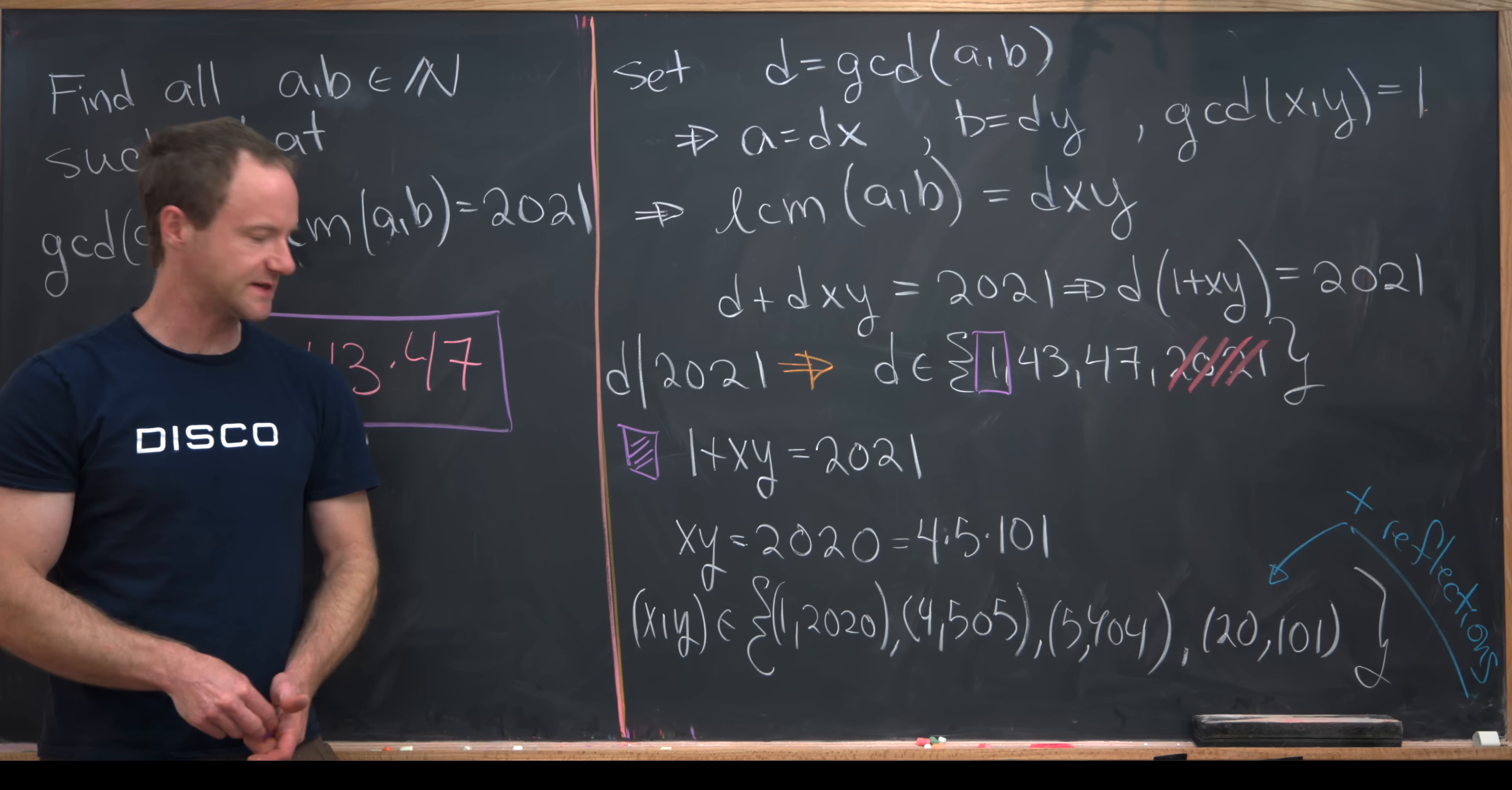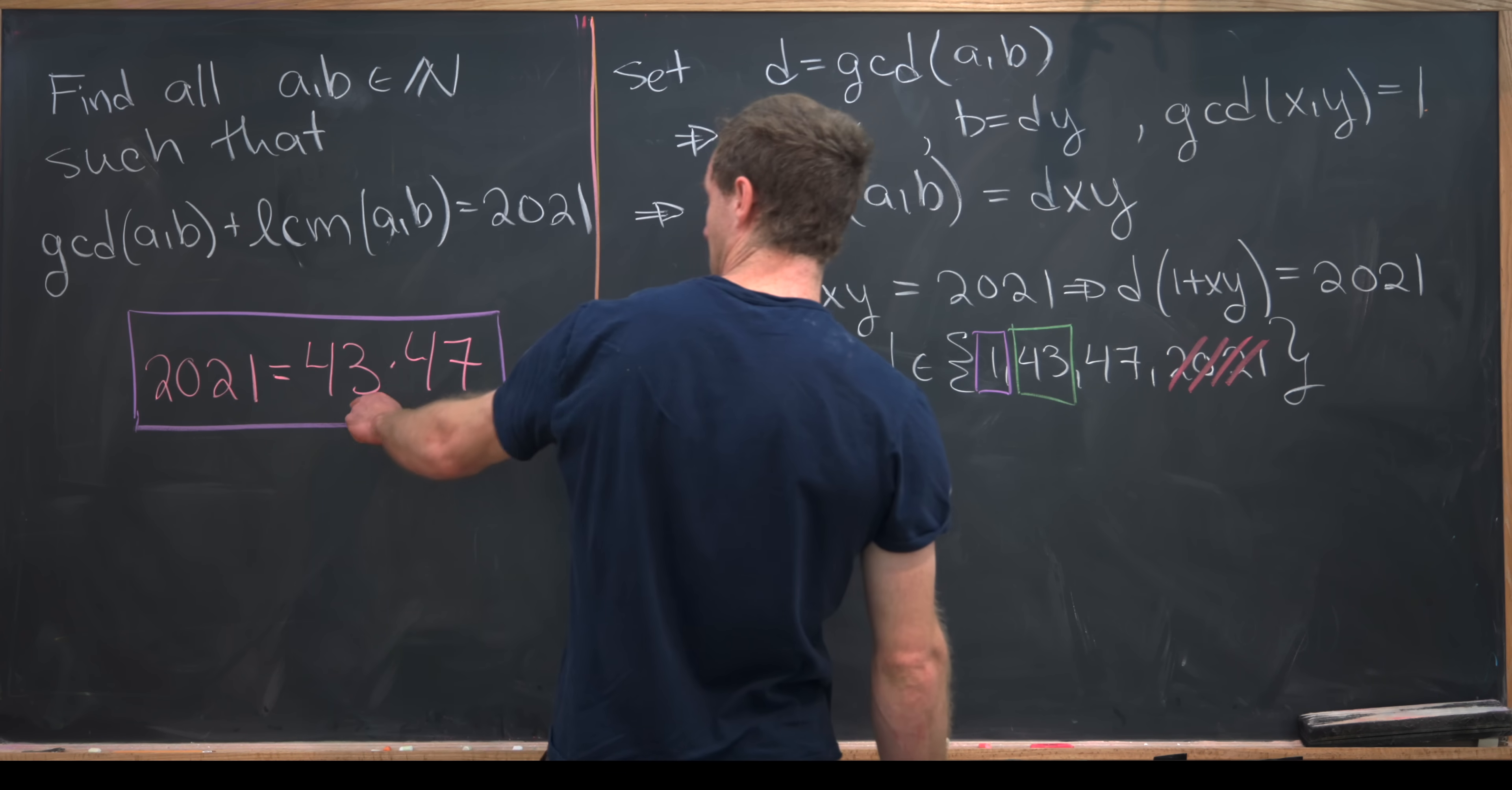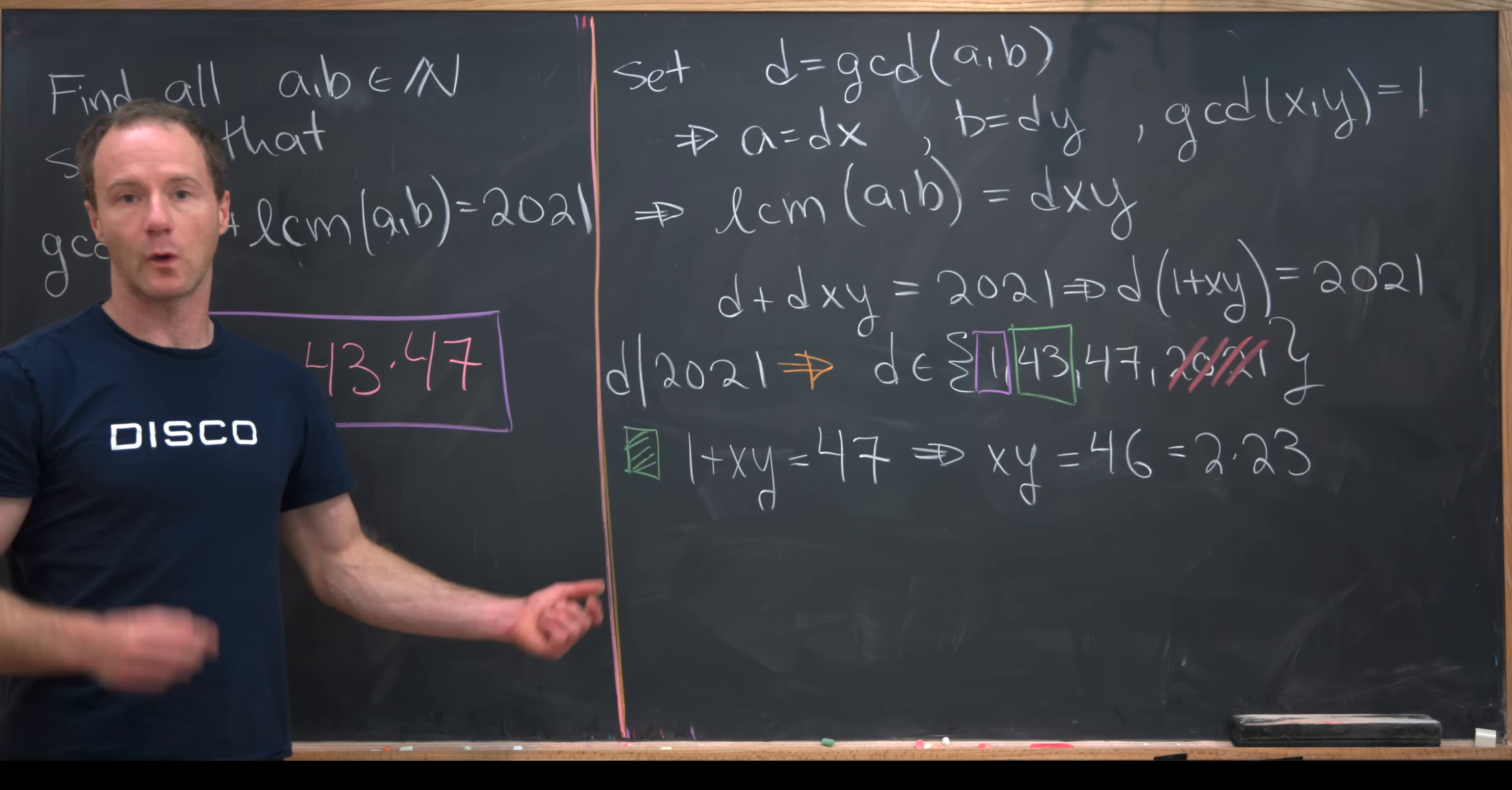Now that we've taken care of this purple case, let's get rid of that and take care of this green case, which is when D is equal to 43. We're ready to look at this green case when D is equal to 43. Notice if D is equal to 43, 1 plus XY is equal to 2021 divided by 43, but that makes it equal to 47. If 1 plus XY is equal to 47, that tells us that XY in this case is equal to 46. Now we can easily factor 46 into primes as 2 times 23.